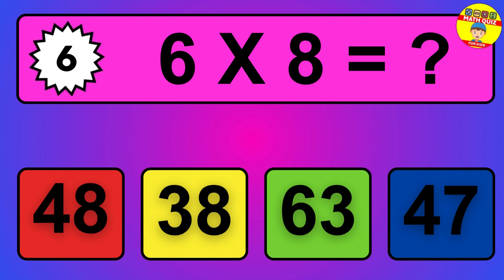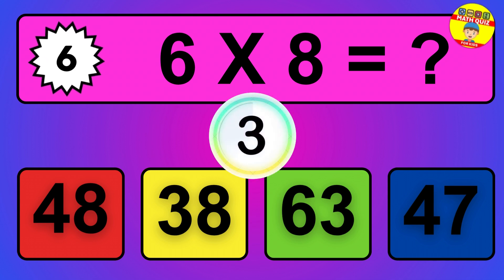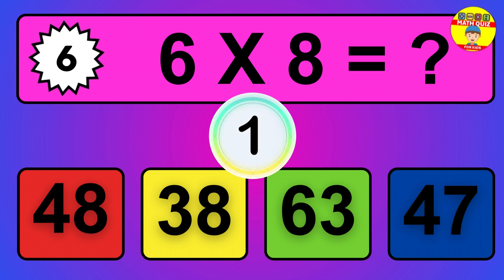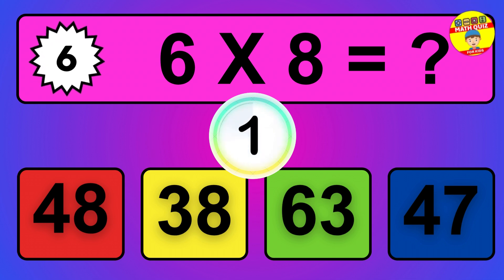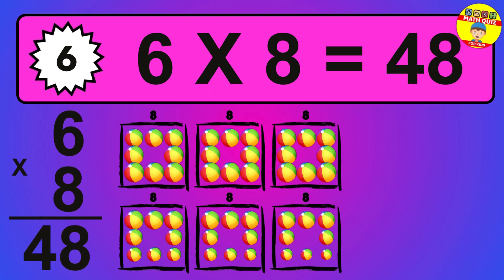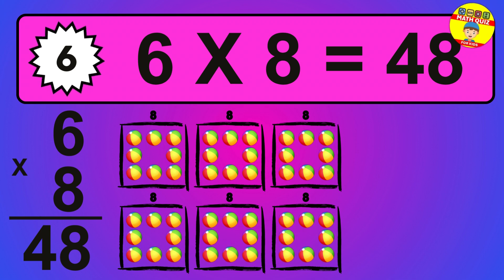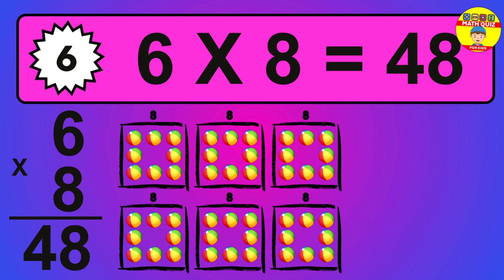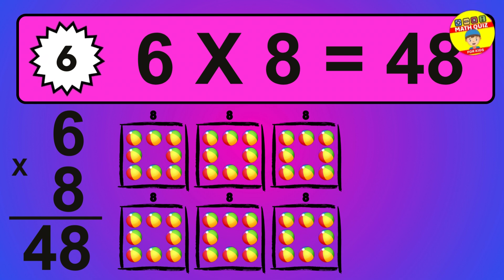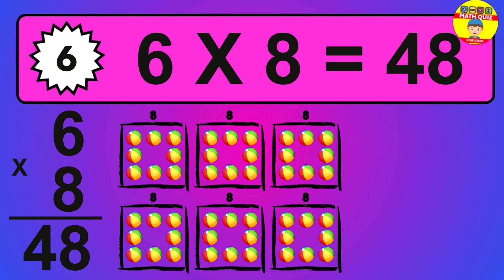Question 6. 6 times 8 equals what? So the answer is 6 times 8 is 48. To calculate, we have 6 groups with 8 balls each one. So how many balls do we have? 48 balls.